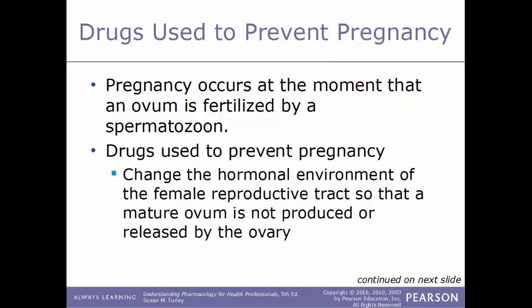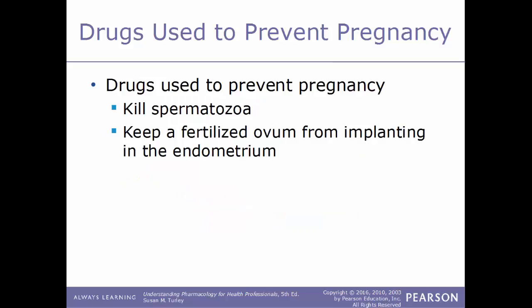We'll start the chapter with drugs that are used to prevent pregnancy. Pregnancy occurs at the moment that an ovum is fertilized by a spermatozoan. Several different drugs are used to prevent pregnancy — some act by changing the hormonal environment so that a mature ovum is not produced or released, others by killing spermatozoa, or by keeping a fertilized ovum from implanting within the endometrium.